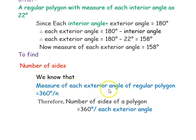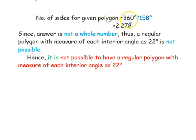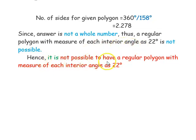Now we want to find the number of sides of the polygon if each exterior angle is 158 degrees. Using the formula, n equals 360 degrees divided by each exterior angle, we substitute: n equals 360 degrees divided by 158 degrees, which gives 2.278. Since this is not a whole number, and the number of sides must be a whole number, it is not possible to have a regular polygon with measure of each interior angle as 22 degrees.